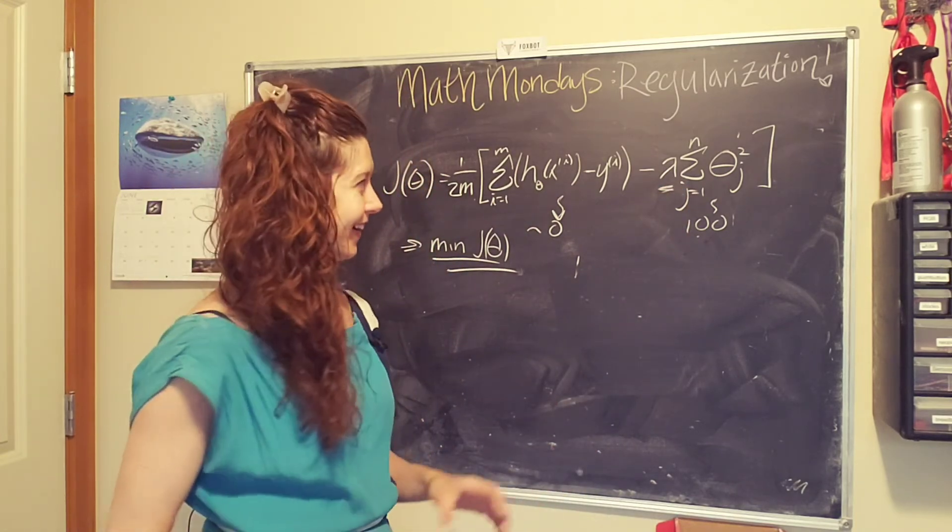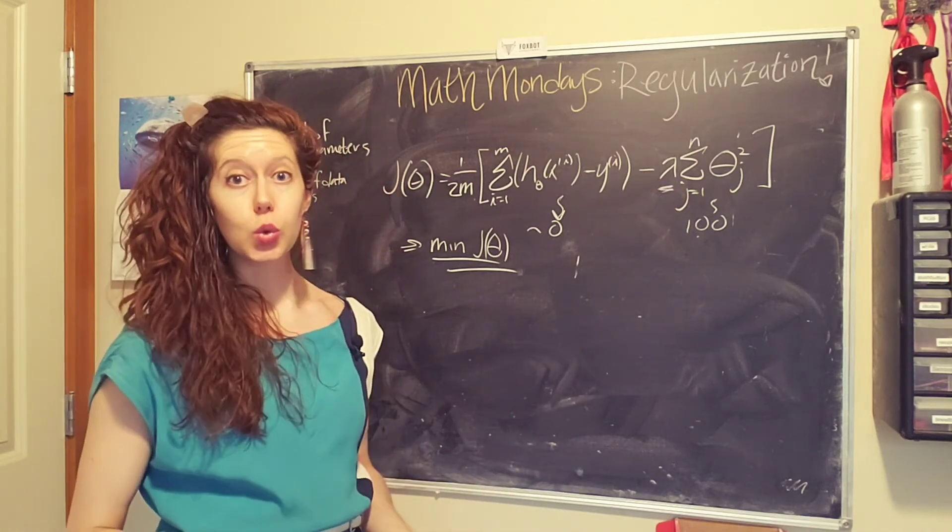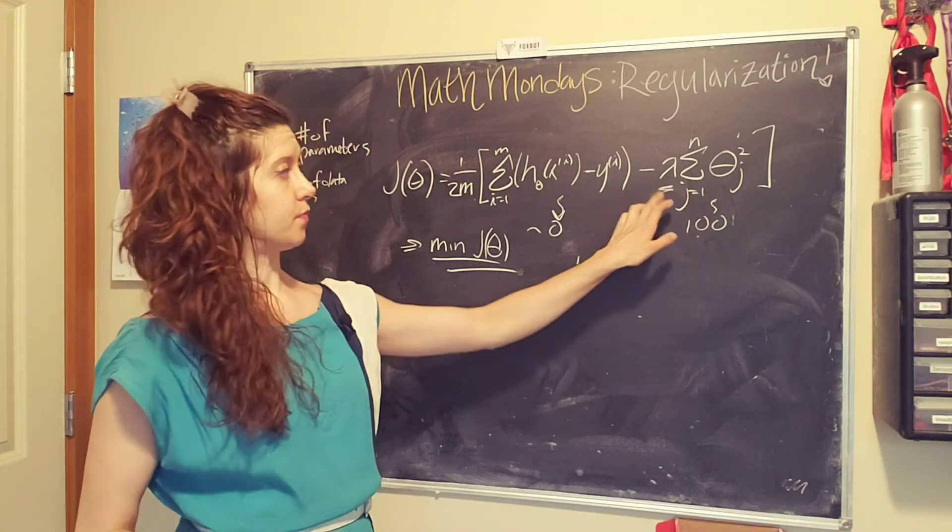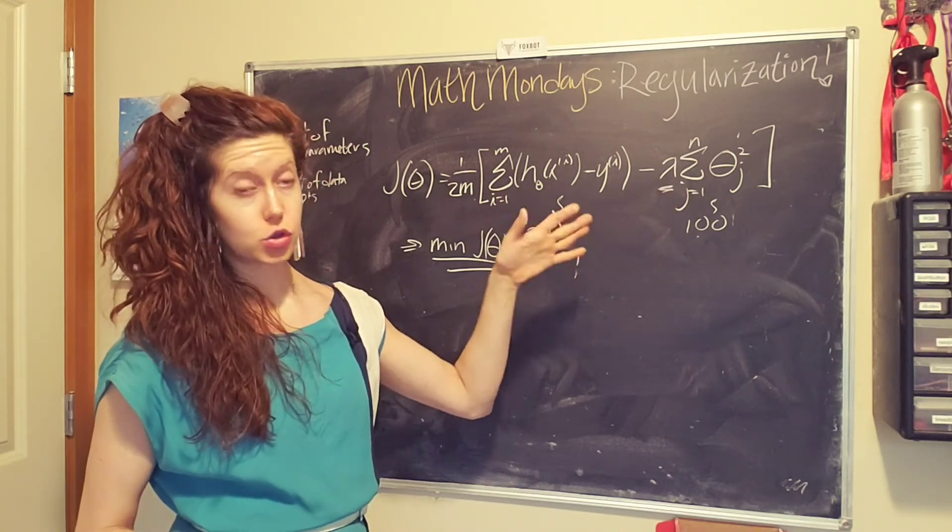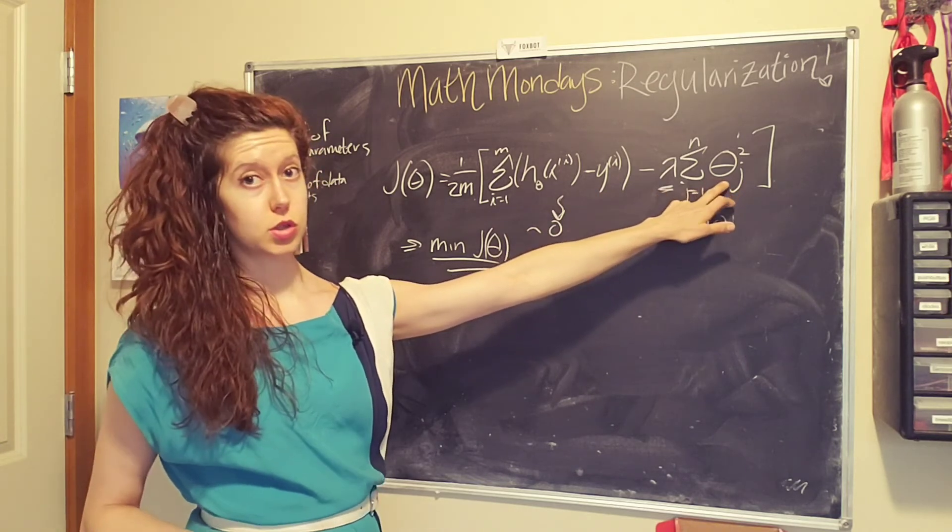We're going to use a color. This is called the regularization parameter, oh I said that okay. So this parameter is something that we can tune to get the best fit to our data.